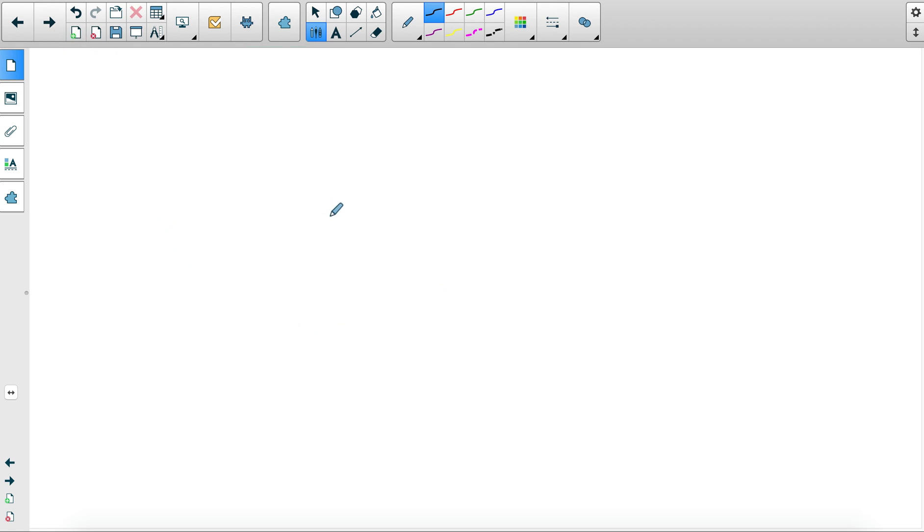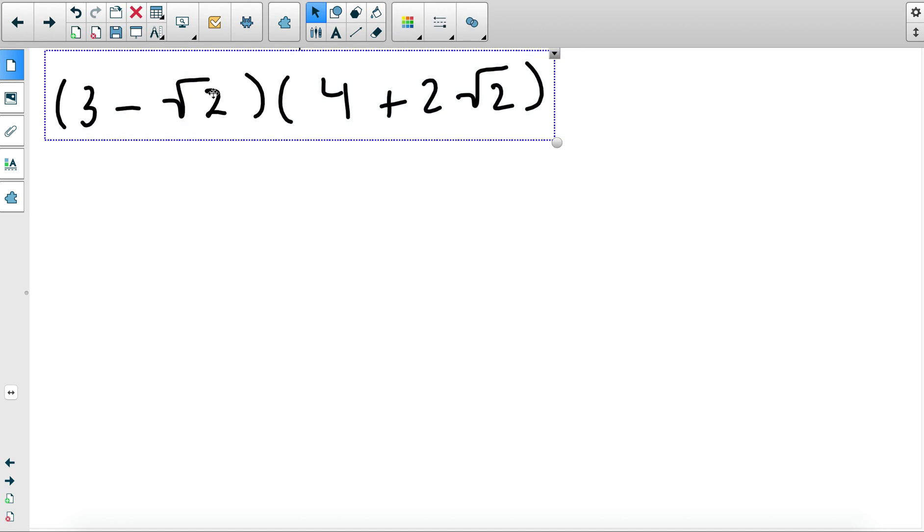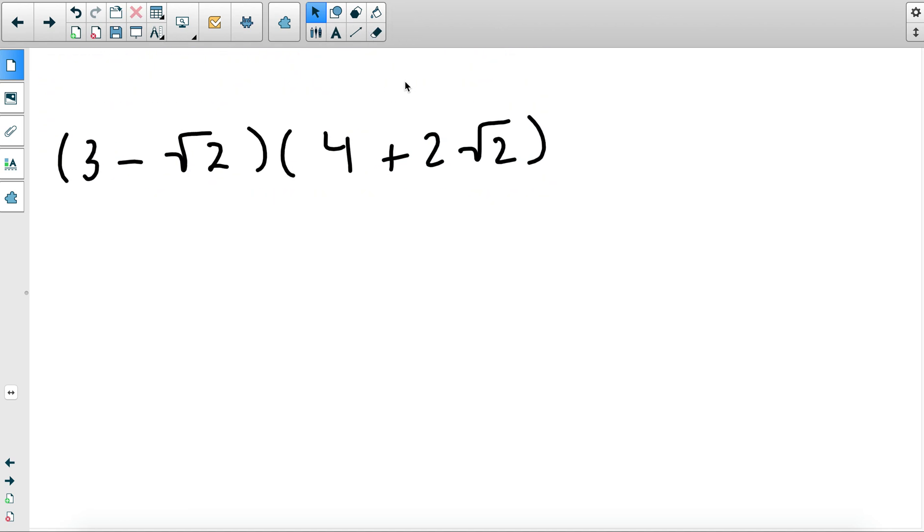Now what if we have double brackets? In this case I have three minus square root of two times four plus two square root of two. In this case you will still use the properties that we've been using before with expanding double brackets. Just make sure you use the arrows and make sure you multiply every single term. So three times four will be twelve.